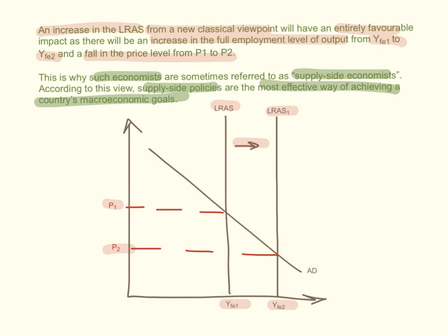Monetarists and new classical economists are not fans of demand-side policies. They believe these don't really affect the productive capacity of the economy — they can either be inflationary or deflationary and just affect the price level. For economic growth to happen in the long run, the government has to adopt supply-side policies, which are the most effective way of achieving a country's macroeconomic goals.